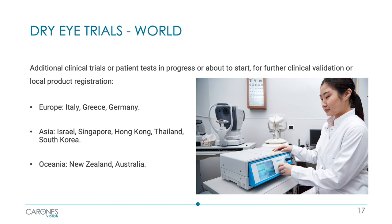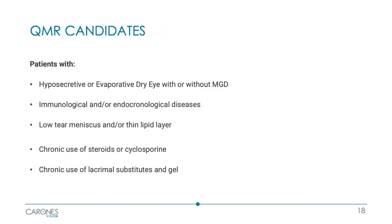Several studies have been conducted here in Italy, in Europe, and in other parts of the world. The candidates for this treatment are patients with hyposecretive, evaporative, or mixed dry eye with meibomian gland dysfunction, patients who have immunological or endocrinological diseases, who have a poor tear meniscus and/or a thin lipid layer, and who usually use steroids or cyclosporine and abuse artificial tears or tear gels.